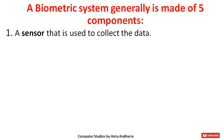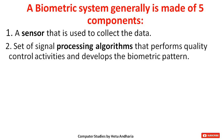The first component is a sensor that is used to collect data. For example, on our mobile phone at the backside — and now also on the power button — when you press your finger it will collect the data, so that is known as a sensor. The second component is a set of signal processing algorithms that perform quality control activities and develop the biometric pattern. After scanning your fingerprint with the sensor, the signal is processed to develop a biometric pattern for that particular finger.